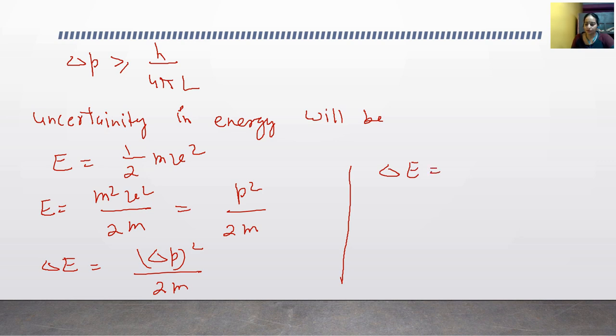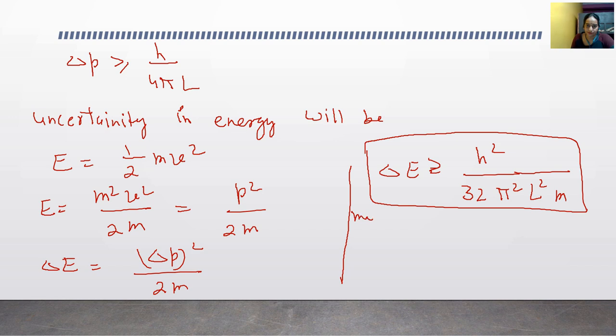In terms of momentum, if delta p is considered, the total energy will be approximately delta p squared upon 2m, which equals h squared upon 32 π squared L squared m. This is a function of E_1, the minimum energy, same as the relation we calculated before.